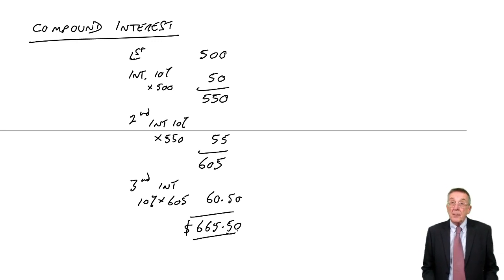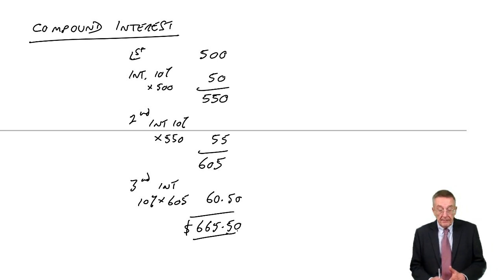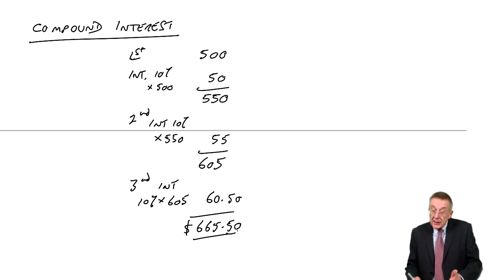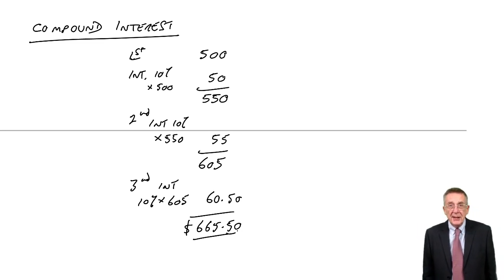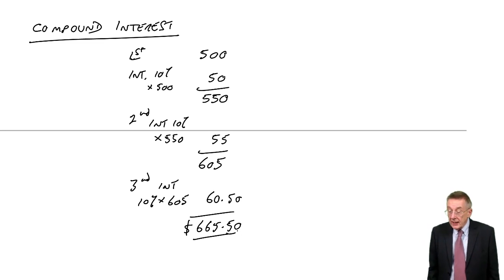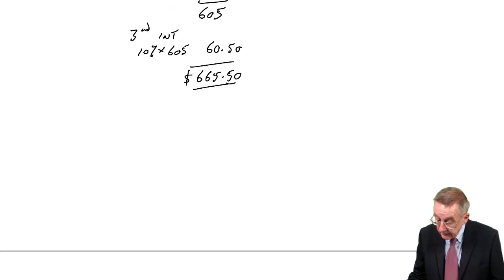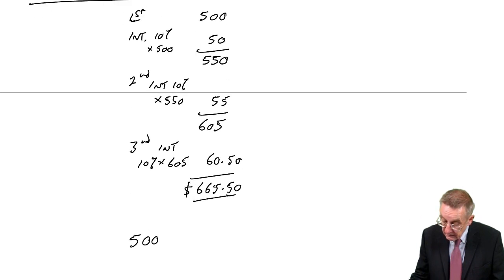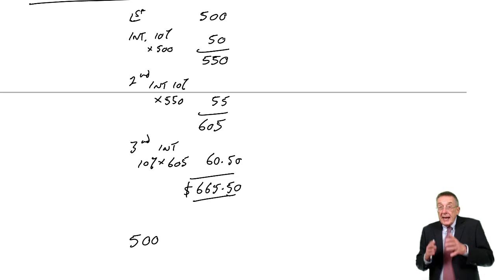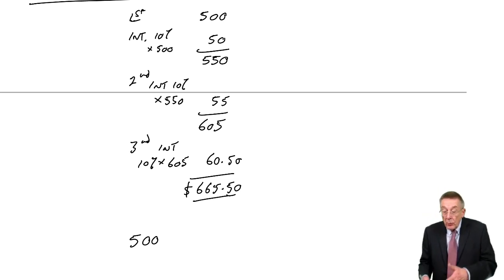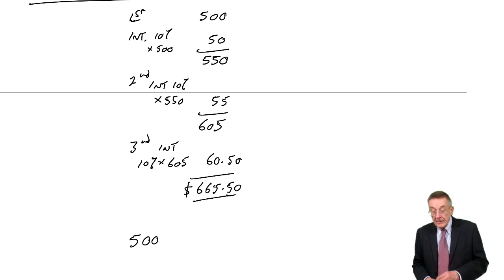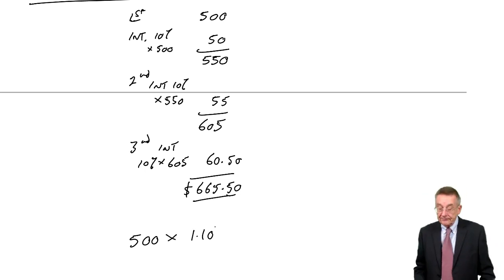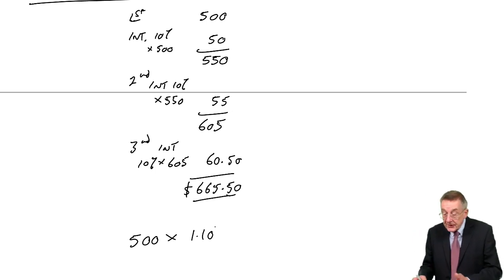In the exam it's always compound interest unless you're specifically told otherwise. That's not hard, but obviously if he'd left it for 10 years, it would take time adding on 10% each year. So there is a quick way. He started with $500. At the end of the first year he has $500 plus 10%, i.e. 500 plus 0.1 of 500, which is the same as multiplying by 1.10. So $500 times 1.10 is $550.